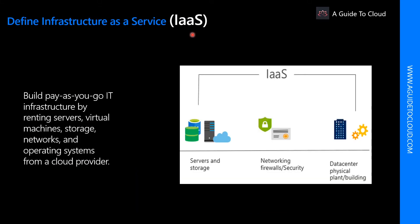Let's understand infrastructure as a service in more detail. IaaS is the most basic category of cloud computing services. With IaaS you rent IT hardware — which includes virtual machines, storage, networks, and operating systems — from a cloud provider. The pricing model is a pay-as-you-go model. It's an instant computing infrastructure provisioned and managed over the internet.